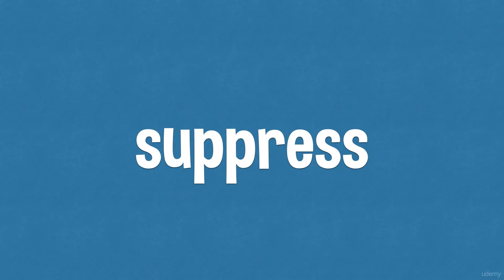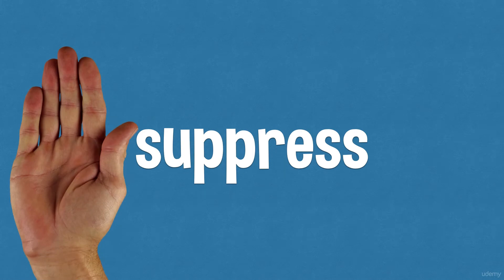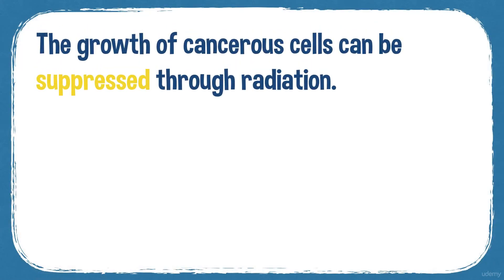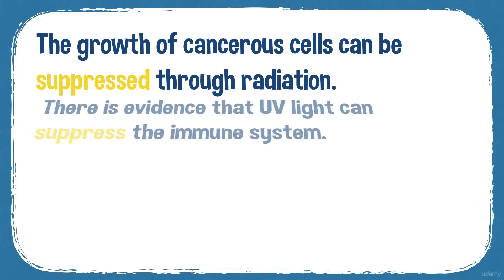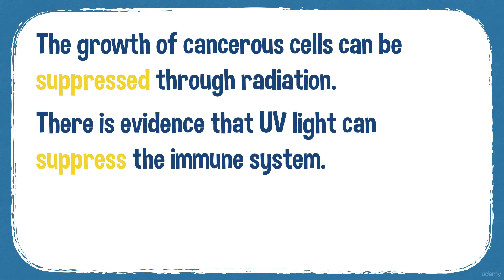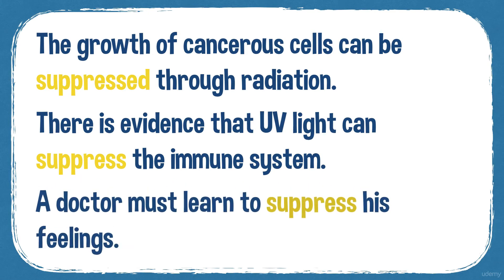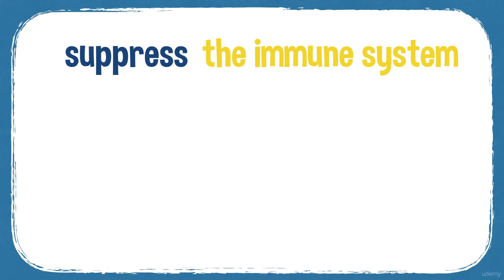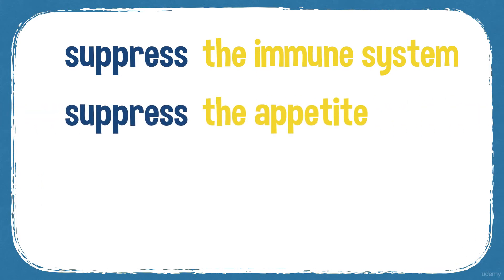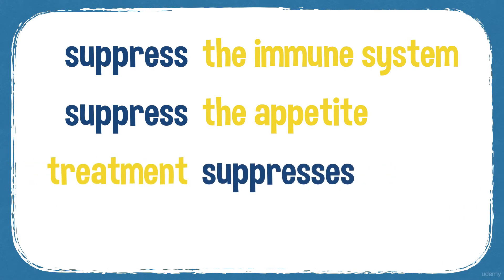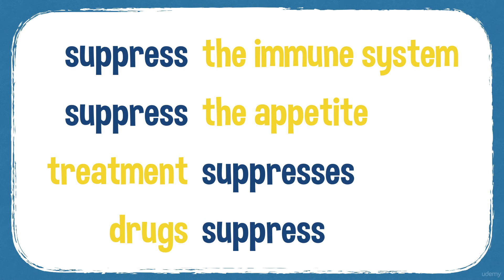Here's the next word: suppress. If a natural function of your body is suppressed, then it's stopped — for example by drugs or illness. So if your liver function is suppressed, it doesn't work so well; sometimes it stops. Example sentences: the growth of cancerous cells can be suppressed through radiation. There is evidence that UV light can suppress the immune system. And a doctor must learn to suppress his feelings.